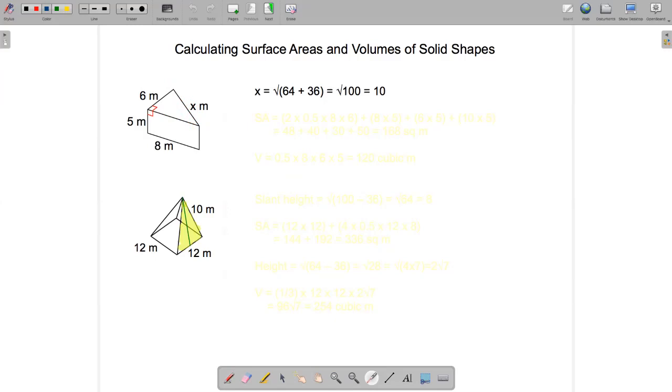Then for the surface area we're going to have two triangles, the one we can see on the top and then one that's identical on the bottom that's hidden, and then we've got three rectangles: the one that we can see on the front, this one that's hidden on the back left and this one that's hidden on the back right.